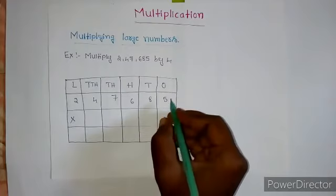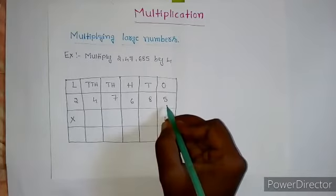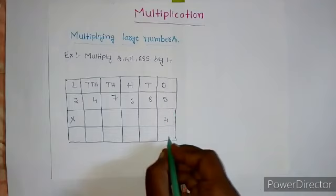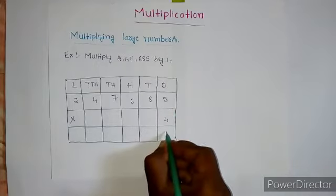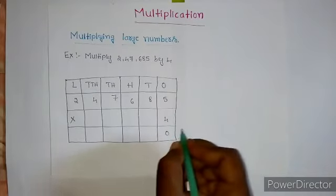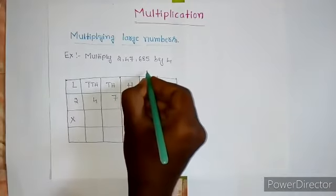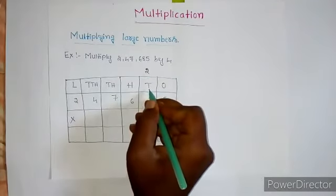4 into 5, how much? 4 fives are 20. I am going to write 0 here and I will carry 2 to this tens place.